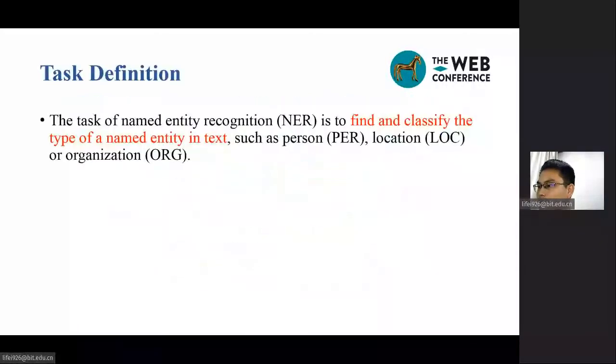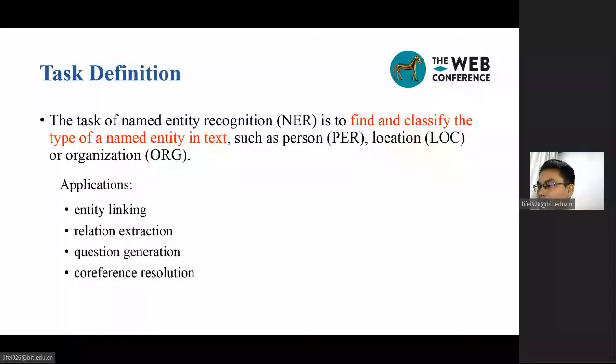The task of named entity recognition is to find and classify the type of a named entity in text such as person, location, or organization. It is well-known as a fundamental problem in natural language processing and serves many downstream applications such as entity linking, relation extraction, question generation, and coreference resolution.